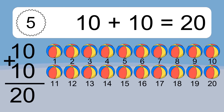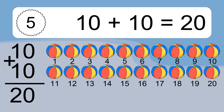10 plus 10 equals 20. Let's count it: 10, 11, 12, 13, 14, 15, 16, 17, 18, 19, 20.